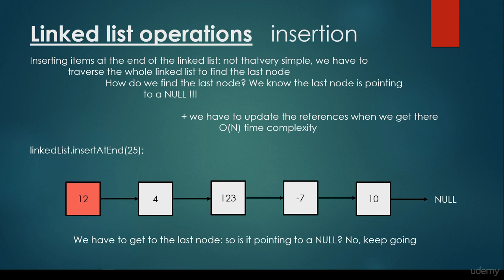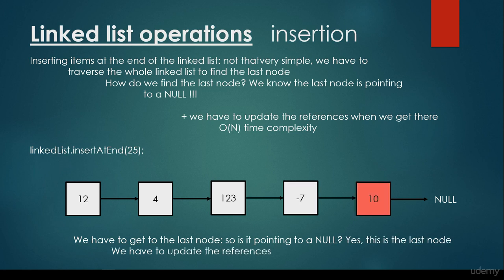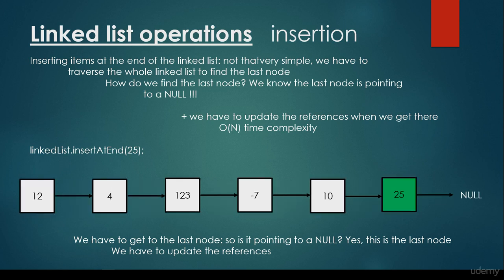We have to get to the last node — the one pointing to null. Is 12 pointing to null? No, it's pointing to 4, so we hop to 4. Is 4 the last node? No, so we hop to 123. Is 123 pointing to null? No. Minus 7 is not the last node either. But 10 is the last node because it's pointing to null. So we just have to update the references: instead of pointing to null, 10 is going to point to 25, and 25 is going to point to null. We have managed to make 25 the last item.